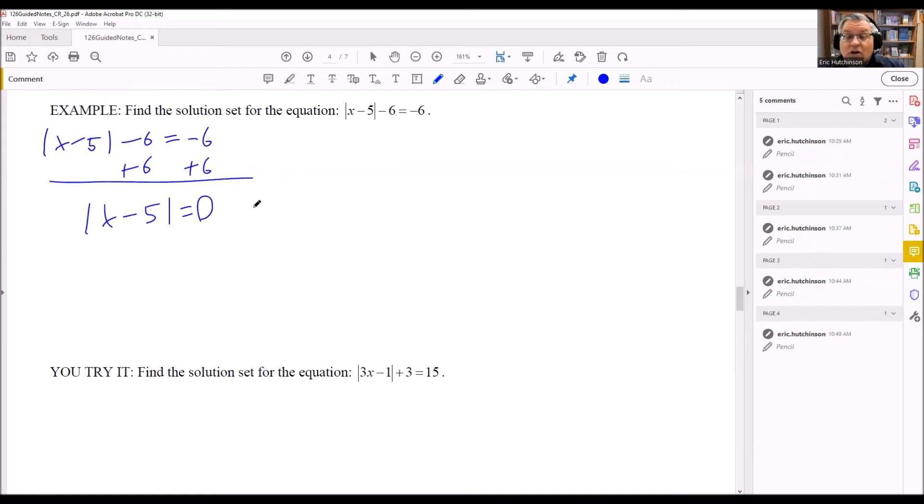So if you get a 0 on the right-hand side, there's only one solution you're going to have. The reason why that is is because normally if I have a positive number on this side, I would just set it up and do two different equations, one positive number and one negative number. But in this case, positive 0 and negative 0 is still 0. So I'm only going to have one equation that I'm going to be setting equal to 0 in this case.